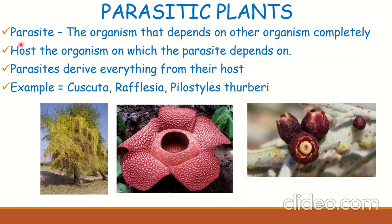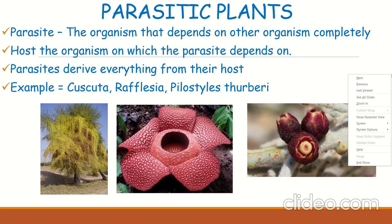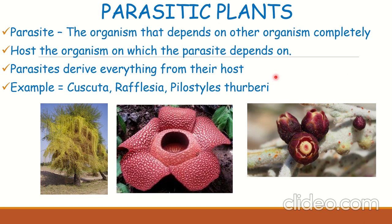Mosquitoes depend on human blood completely, so they are parasites. Here we are talking about plants that are parasites — plants that depend on other plants completely. The host is the organism on which the parasite depends. In the mosquito-human example, the mosquito is the parasite and the human is the host. Similarly, parasitic plants depend on other normal plants for their food.